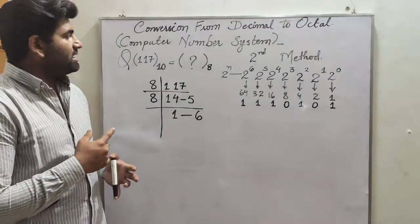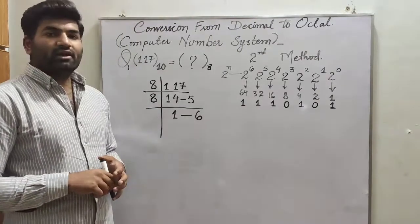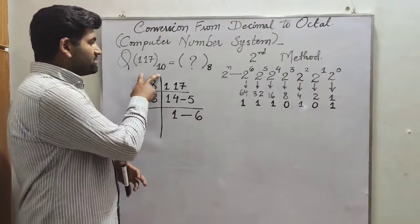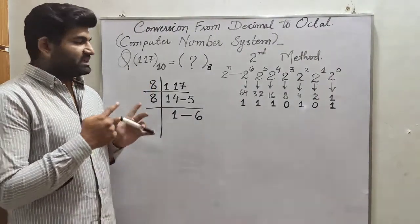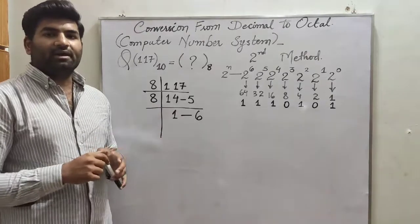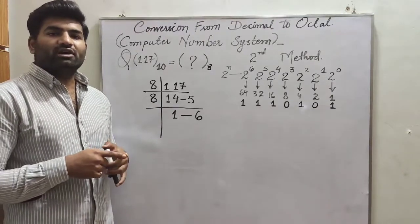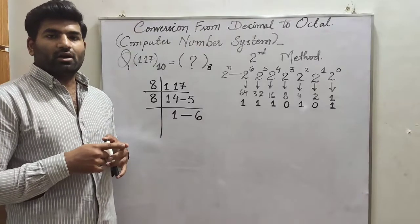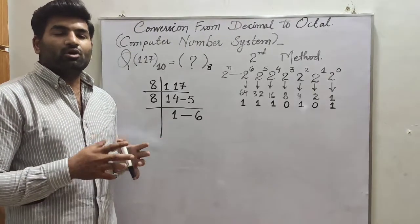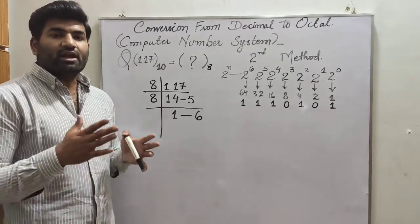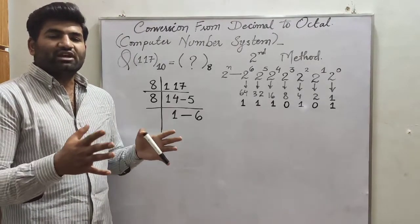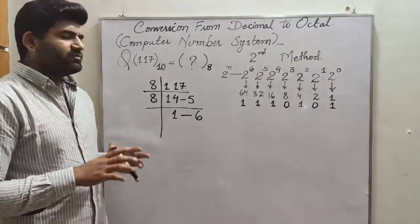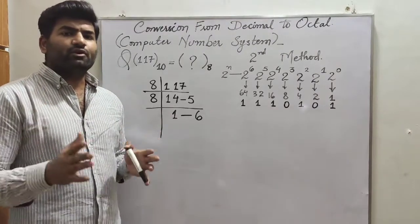I have an example here, which is 117, which is in decimal numbers. In this video, I am going to convert that number into octal number. Octal means eight. That is very easy, very basic. I will discuss the first method.